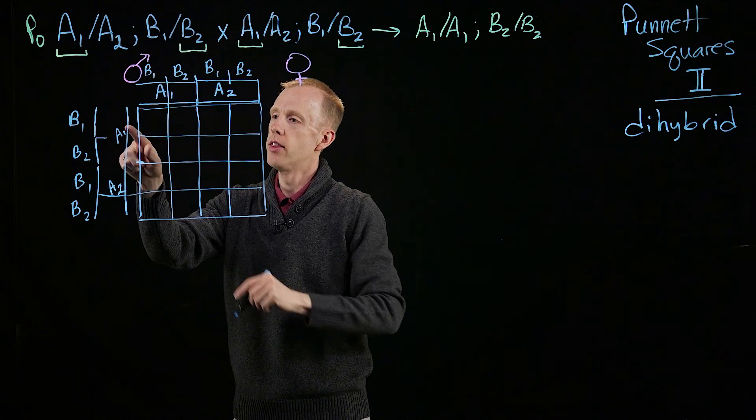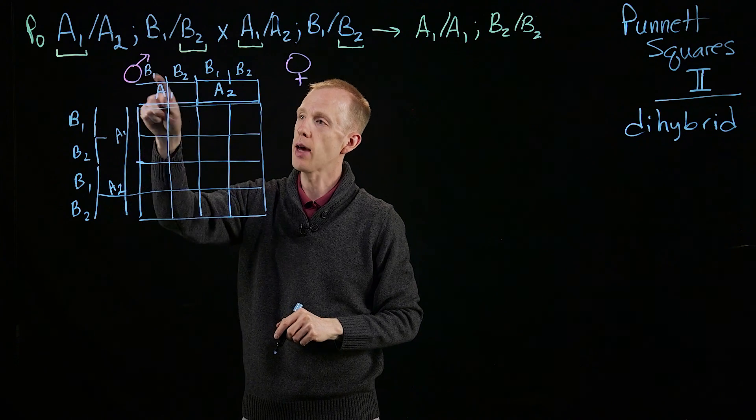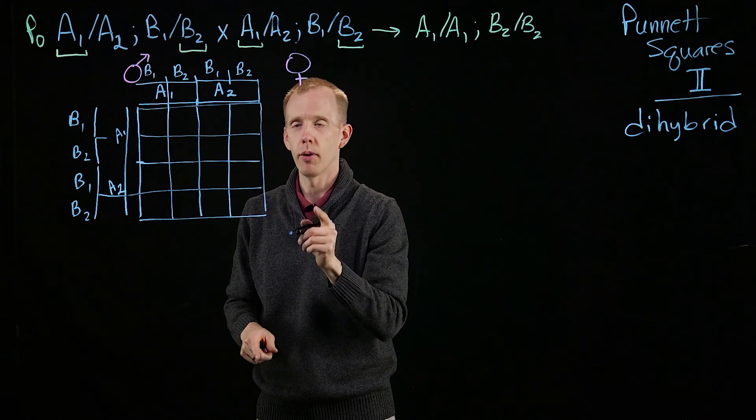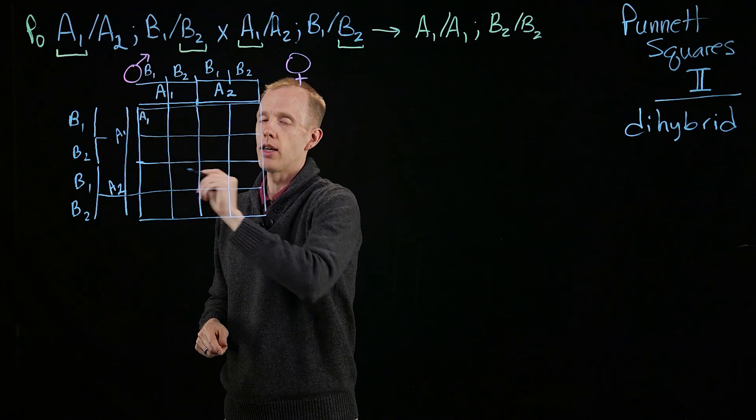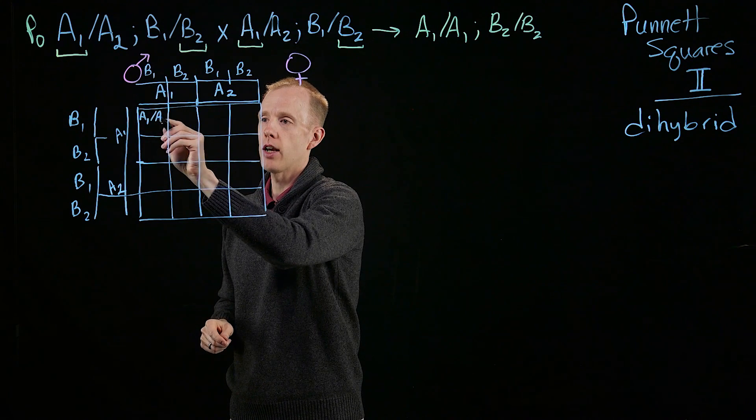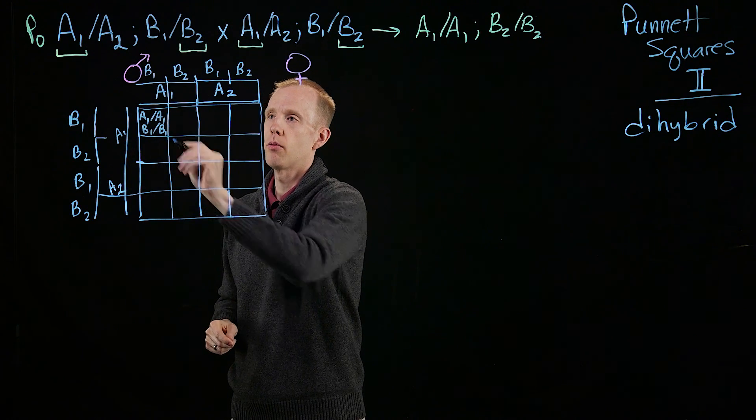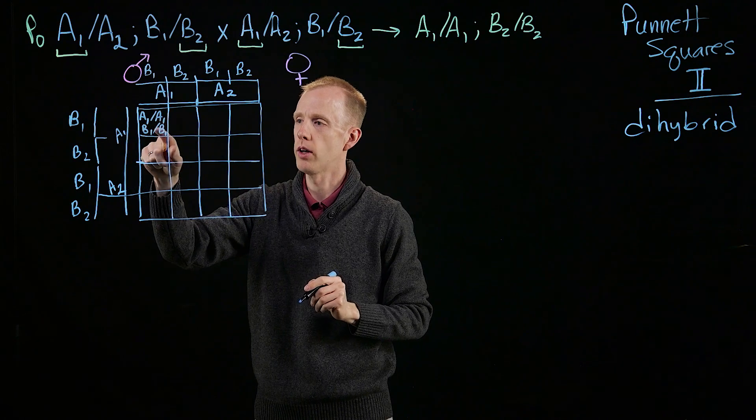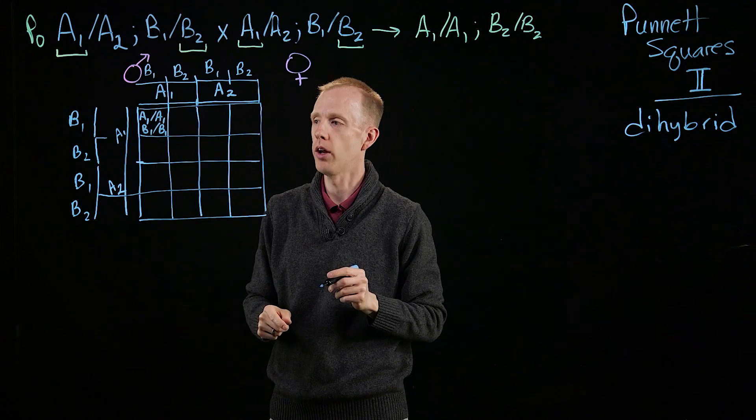So, for example, this gamete was A1B1, and this gamete from dad was A1B1. So, the genotype, it's really important to remember that the genotypes are always written by each locus separately. So we look at A first, A1 slash A1, and then this is also B1, B1. A1B1, A1B1. Homozygous at gene A for allele 1, and at gene B for allele 1.